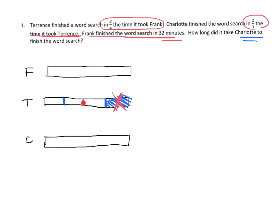Terence conveniently has only three pieces. Charlotte started out the whole length, but we chop off one piece — it's gone. Then out of Terence's three pieces, Charlotte did it in two-thirds, so we cross off one unit for Terence and two units for Charlotte, leaving Charlotte with two of Terence's three units.